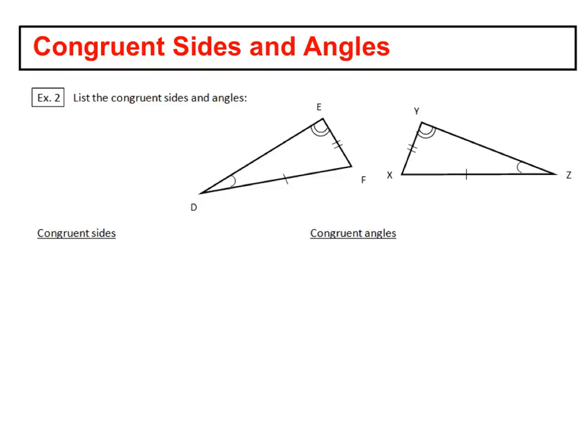We want to know what the congruent sides are. So in the first triangle let's focus on the sides and you can see DF has this one little dash in there. So we're going to say DF and we're going to put a segment line above it, is congruent to and then you want to find its matching side in the second triangle.